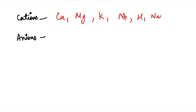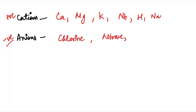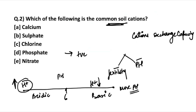These cations are positively charged ions. Anions are negatively charged ions. The commonly available anions in soil are chlorine, nitrate, sulfate, and phosphate. Going back to the question — which of the following is a common soil cation — the answer is calcium. Sulfate, chlorine, phosphate, and nitrate are anions available in the soil.